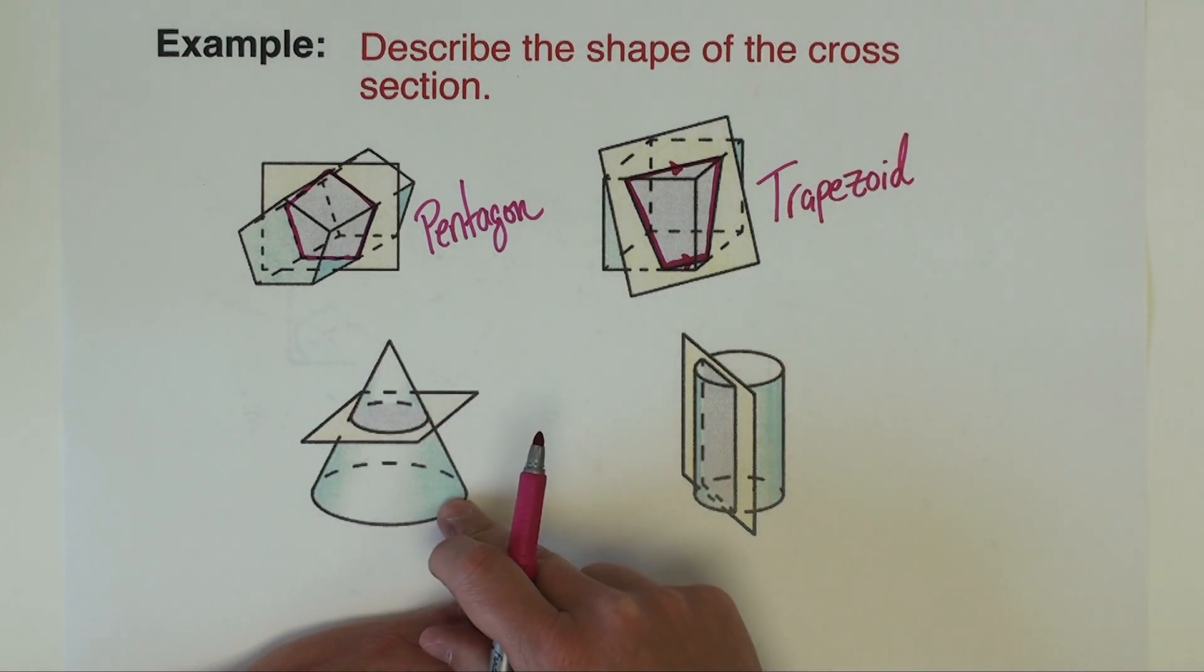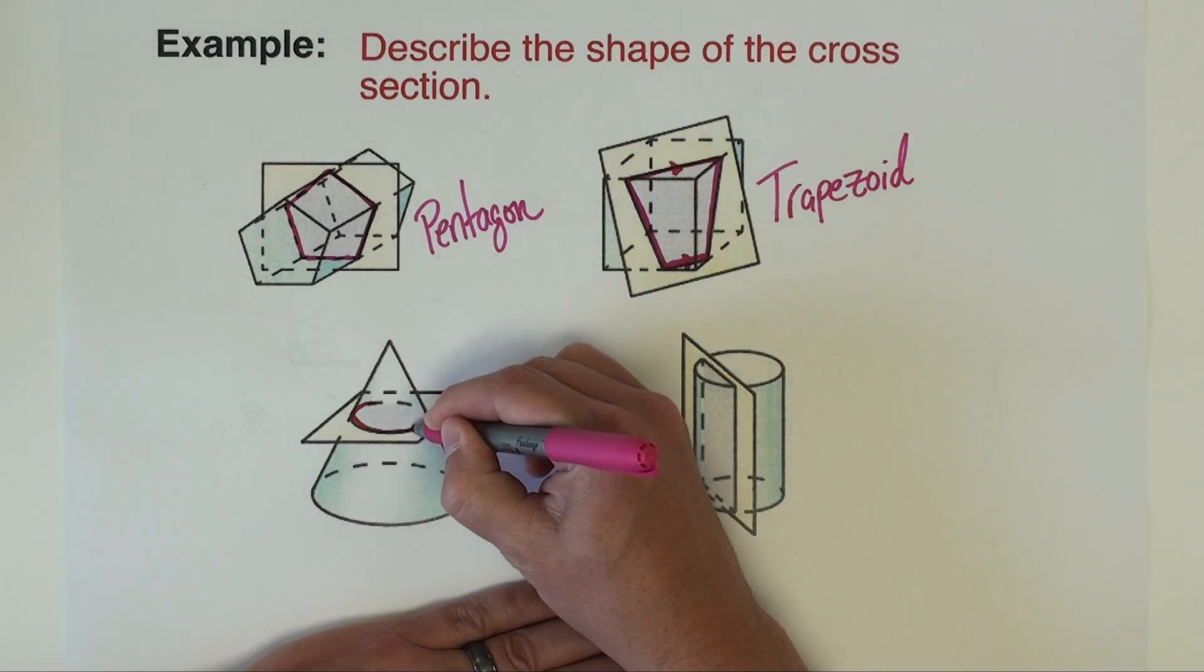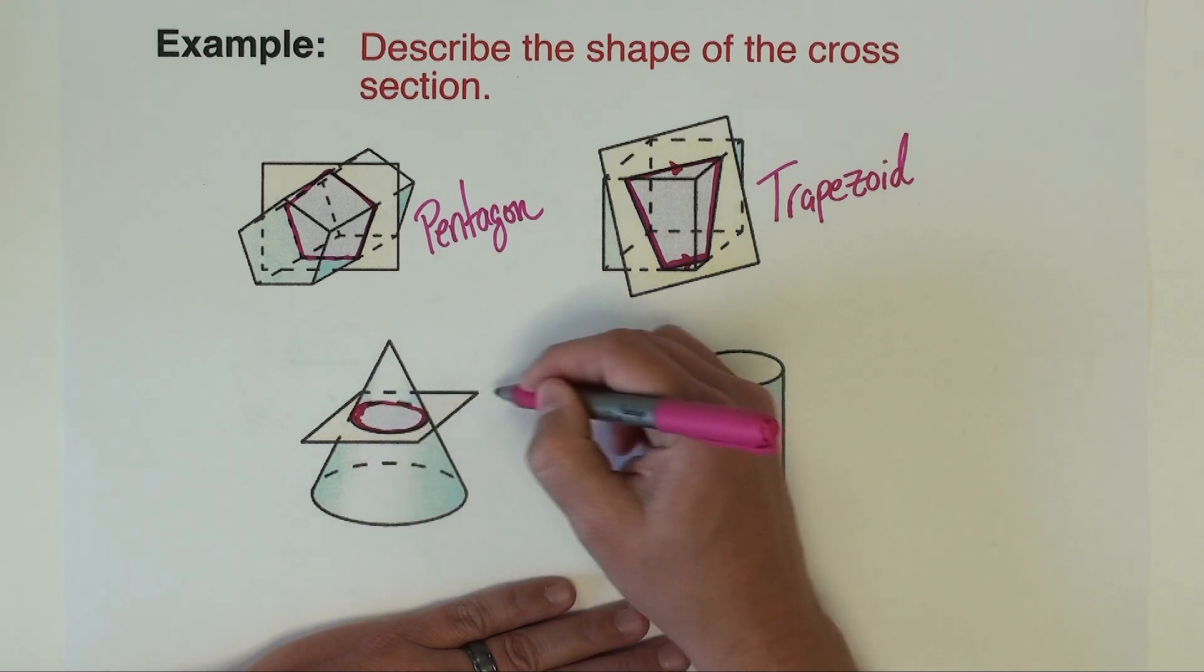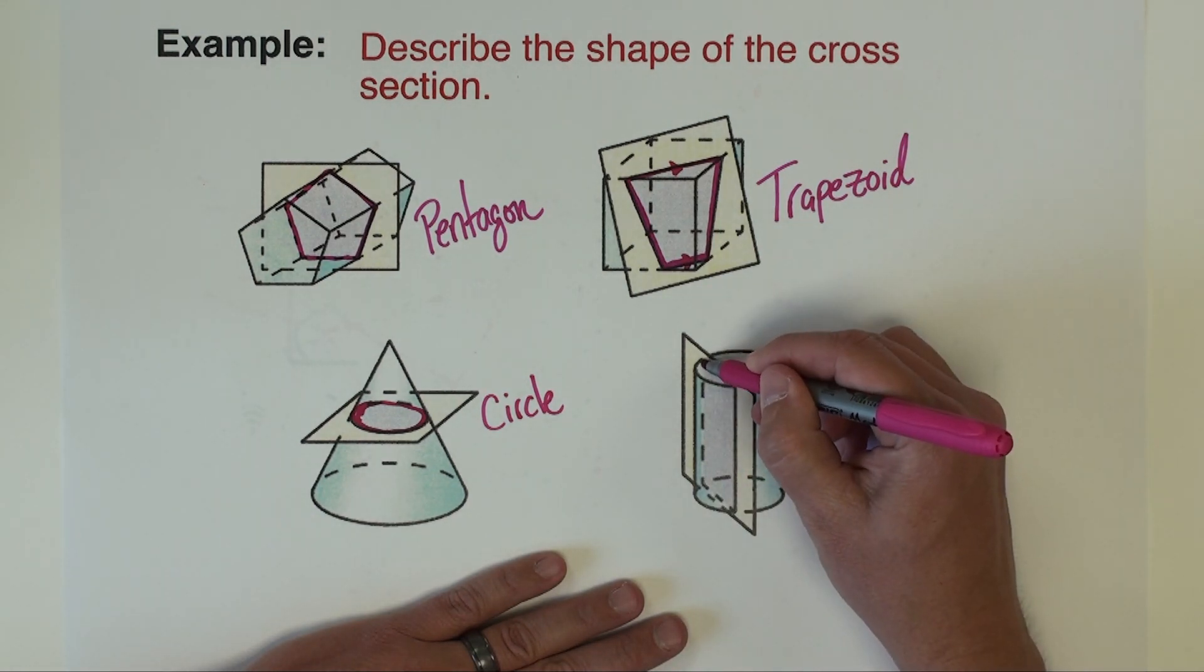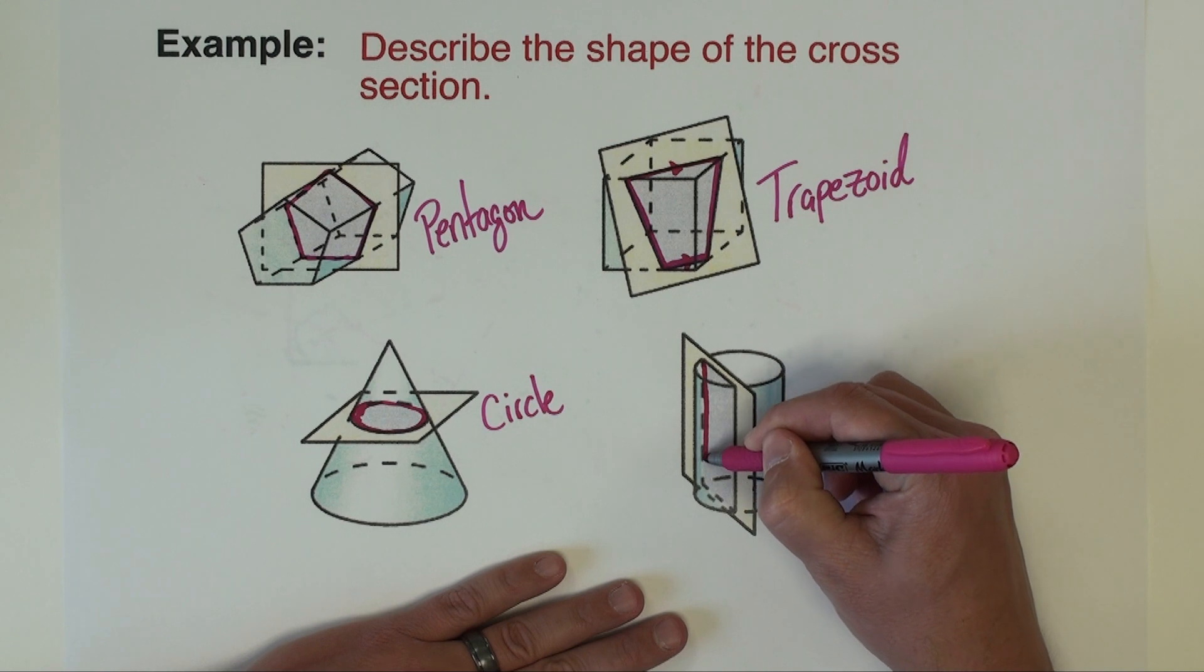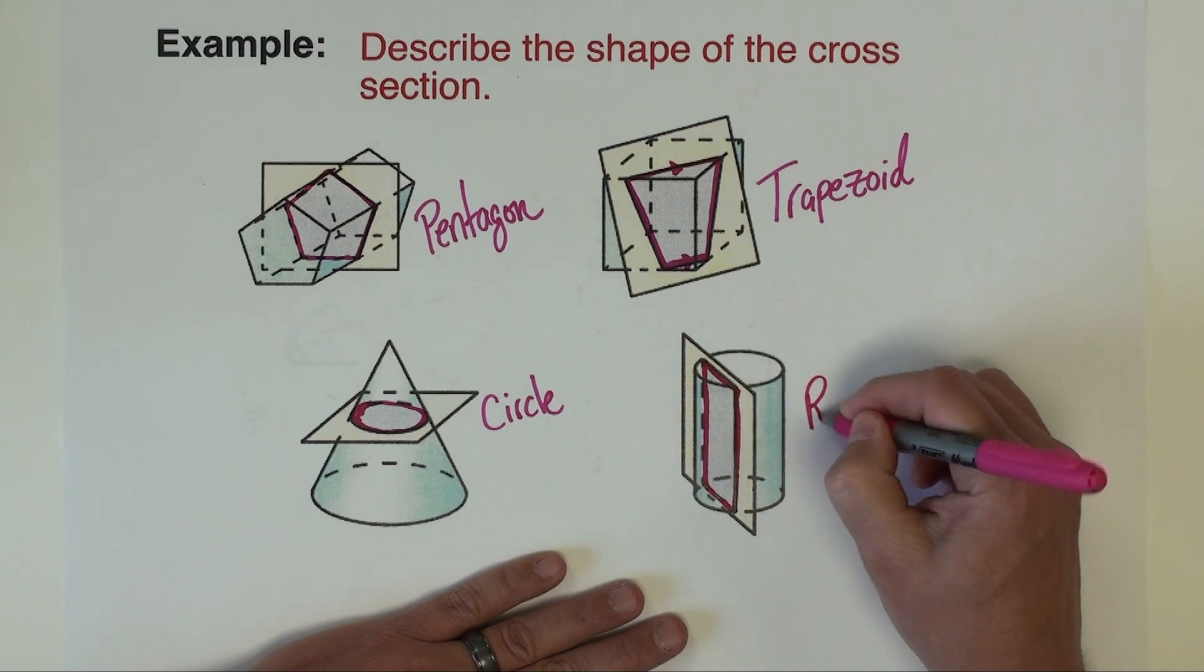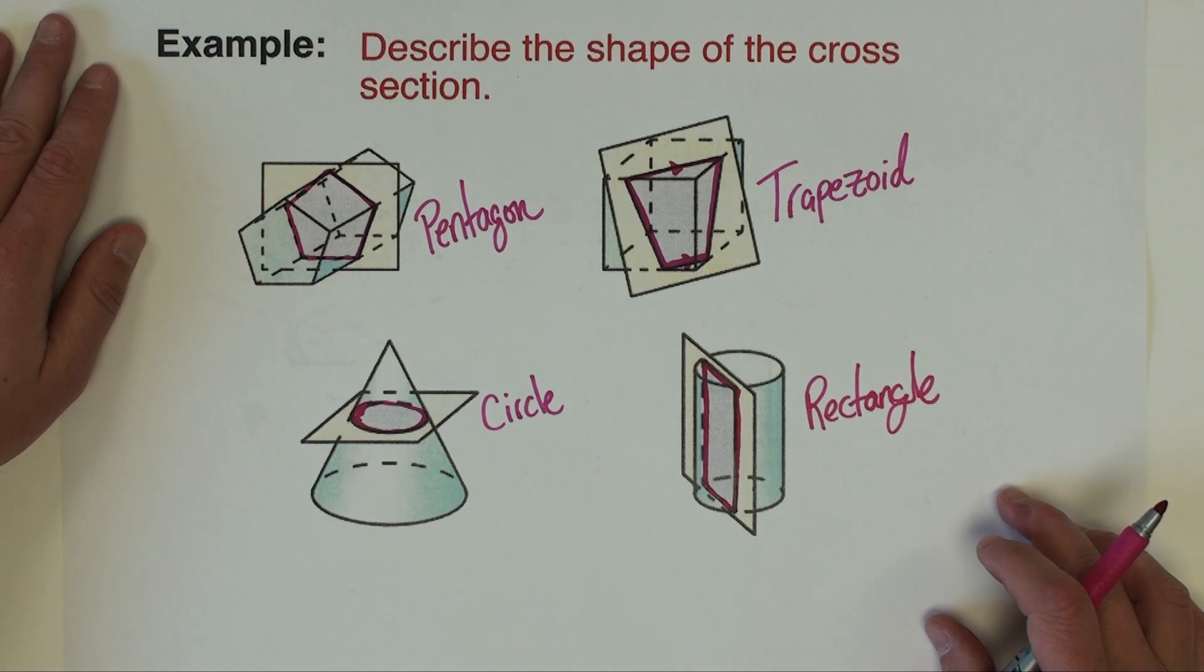Next we've got a cone and we're just slicing right through parallel to the base of that cone. Since the base of this cone is a circle that means the slice that we're taking out of this is also a circle. And finally we've got a cylinder and we've sliced the cylinder perpendicular to the bases. And when I do that the shape that is created is a rectangle. So there's some cross sections. You'll get some practice of that no doubt in your assignment as well.